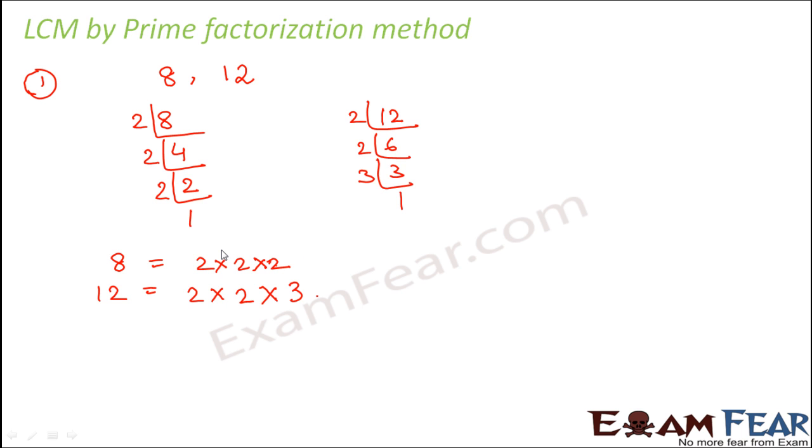But in this case we have to find LCM. So basically we are looking at multiples and we are not looking at the factors. Now here what we do is what are the prime factors that are involved in this case. So the prime factors involved are 2 and 3.